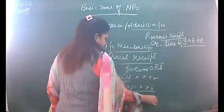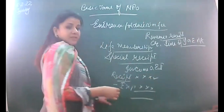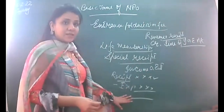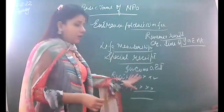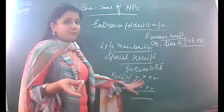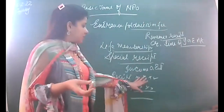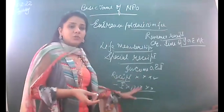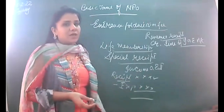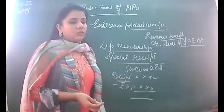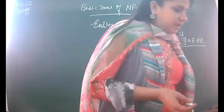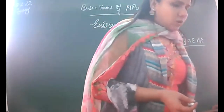For special occasions, such contributions are credited to a separate account—for example, an annual dinner account—and you will be writing the net result on the credit side of your income and expenditure account.